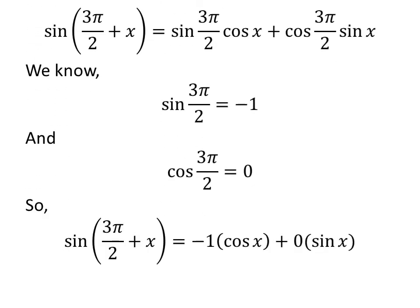Let us replace the value of sine of 3 times pi upon 2 and cosine of 3 times pi upon 2 in the above expression of sine of 3 times pi upon 2 plus x. So, we got: sine of 3 times pi upon 2 plus x is equal to minus 1 times cosine of x plus 0 times sine of x.